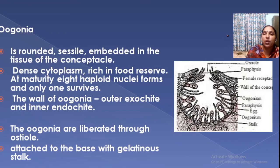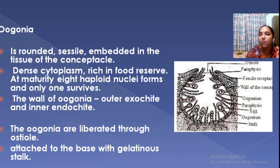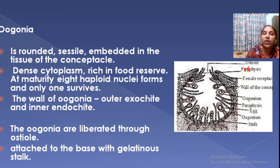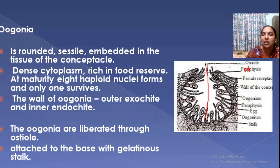The next is the female conceptacle, oogonium — somewhat the same structure with an ostiole, paraphyses inside, and periphyses at the opening. At the inner wall you can see the oogonium — spherical shaped, with cytoplasm and food reserves. The oogonium also has an outer exine and inner endine wall. Oogonia are liberated through the ostiole or attached to a gelatinous disc, coming outside through the gelatinous disc.